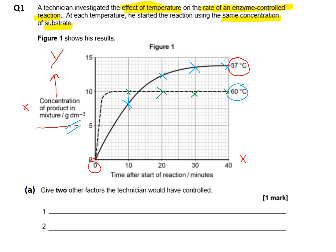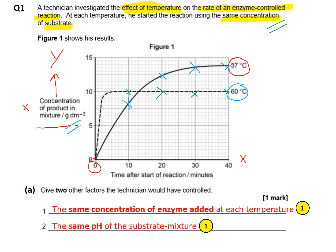Question A asks for two other factors the technician would have controlled, other than the concentration of substrate which is already given. The answers include: the same concentration of enzyme added to each reaction mixture at each temperature — the only variable being changed is temperature. A second mark could be the same pH of the enzyme-substrate mixture, which could be maintained using a buffer, since pH can affect enzyme activity. We could also state the same volume of the enzyme-substrate mixture, for example 10 millilitres.